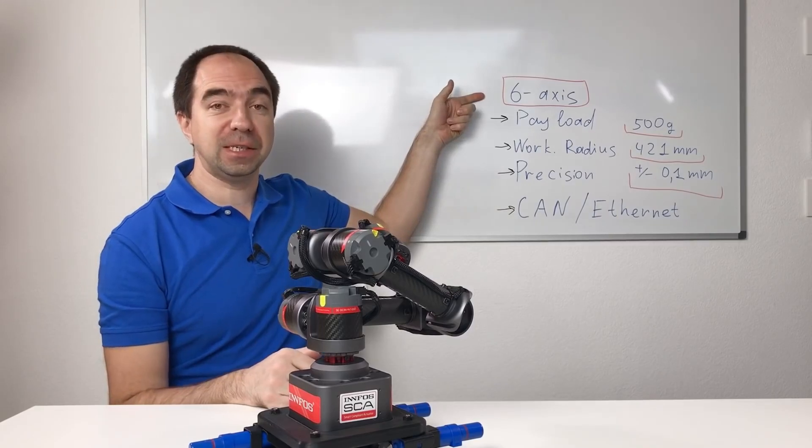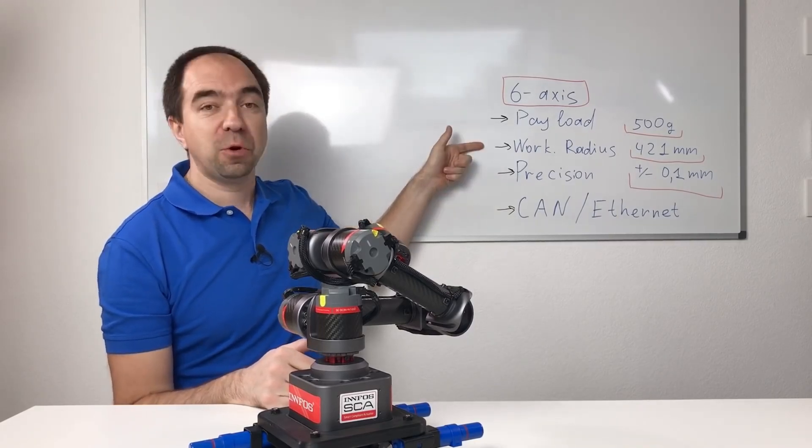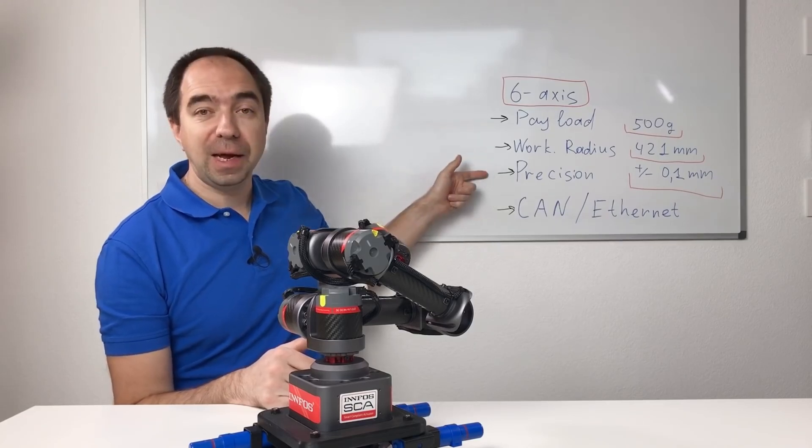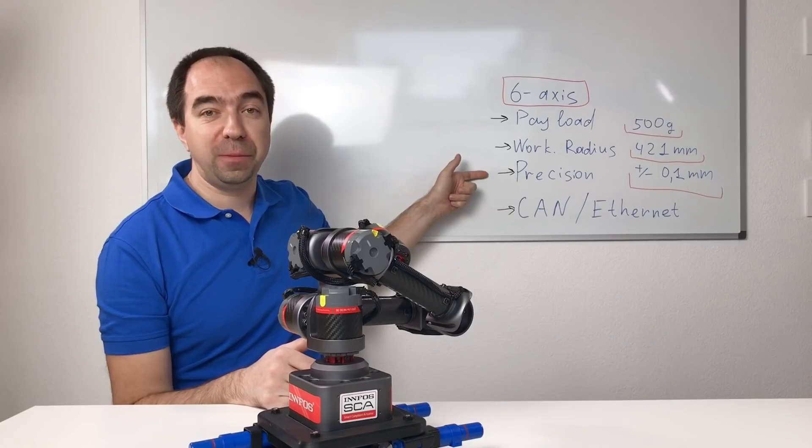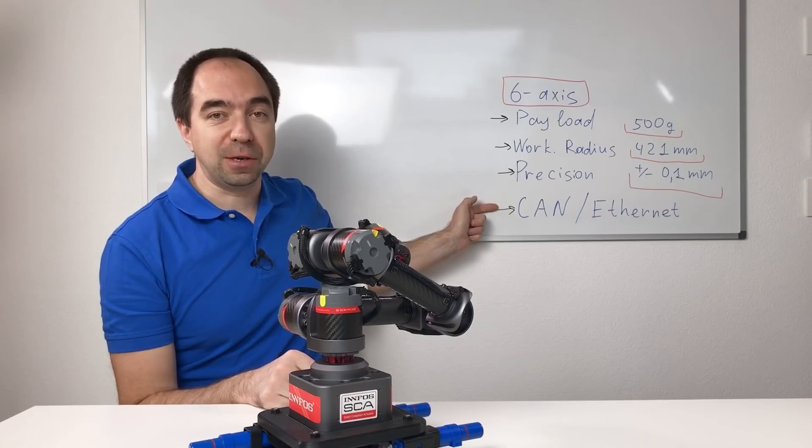First of all, this is a 6-axis robot. It has a payload of 500 grams, the working radius of 421 millimeters, and the precision of 0.1 millimeter. This is really nice. And it can be controlled through CAN or Ethernet. So on paper it looks really perfect.